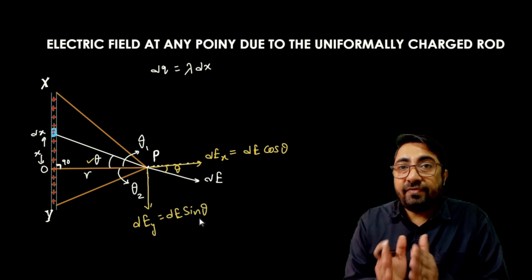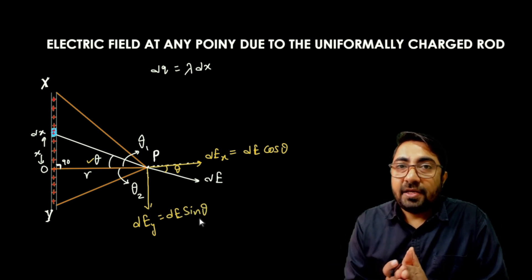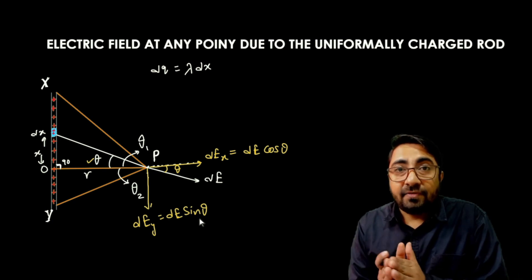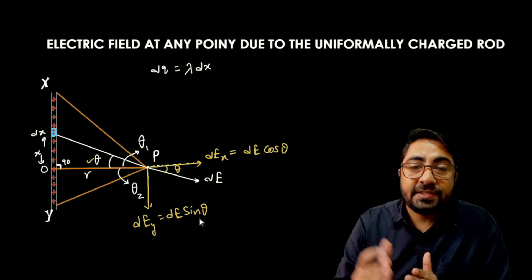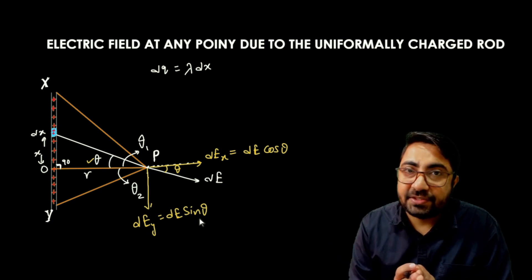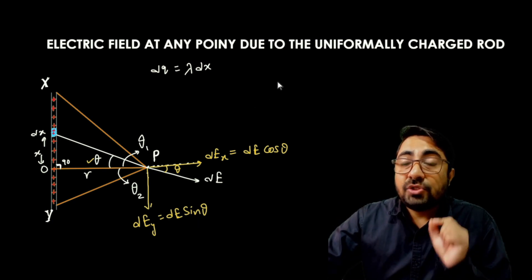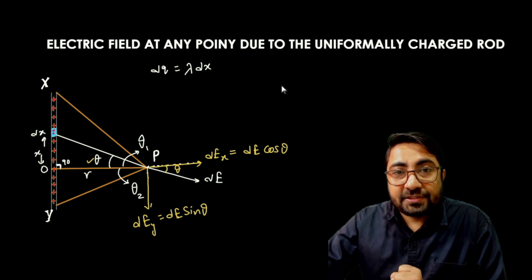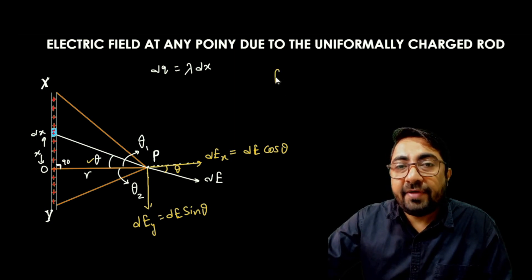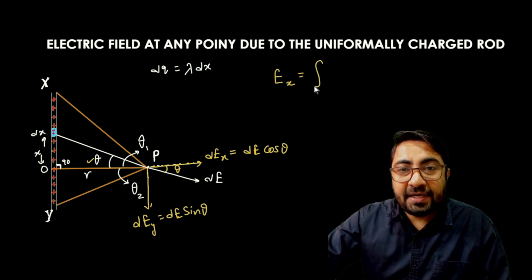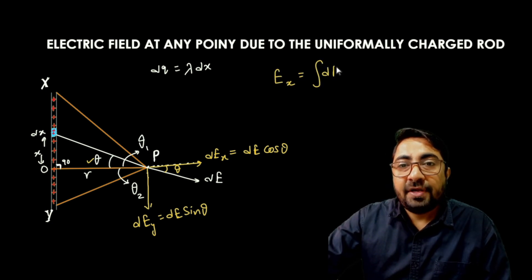The perpendicular component — that is the electric field along the y-axis — is equal to dE sin theta. So we will calculate the electric field separately for the x-axis and for the y-axis, giving us two electric fields: Ex as the integration of dE cos theta, and Ey as the integration of dE sin theta.